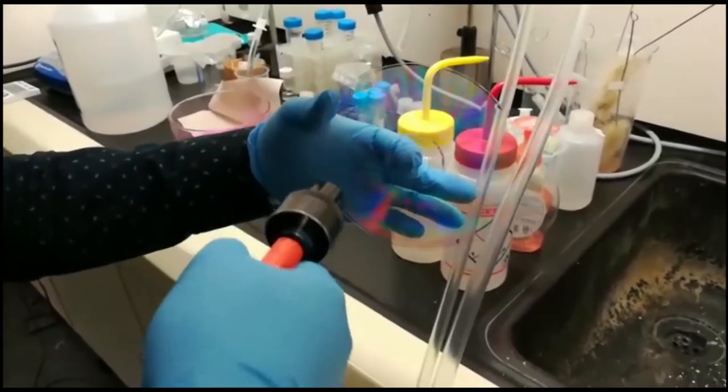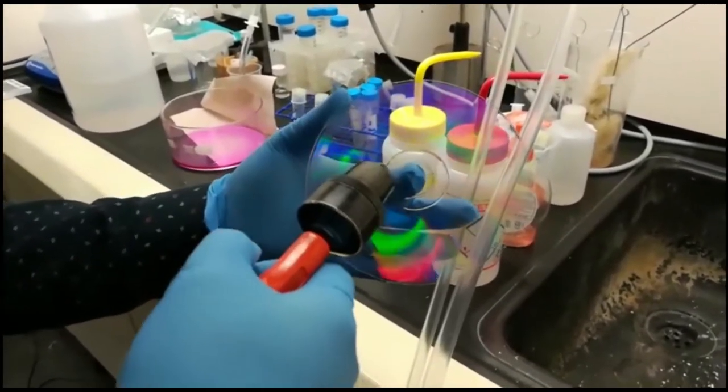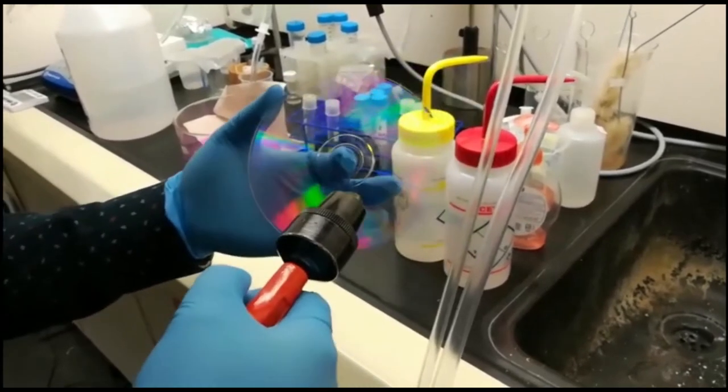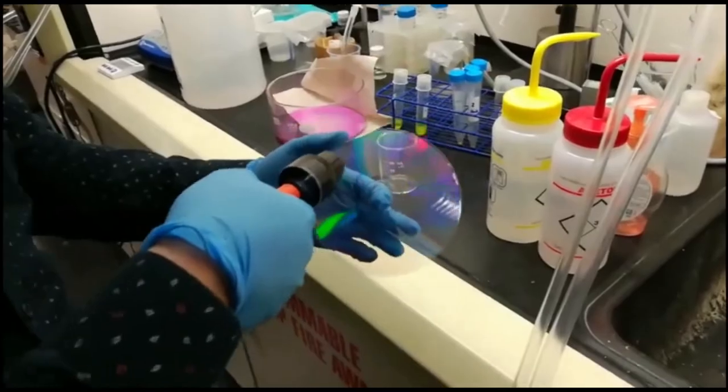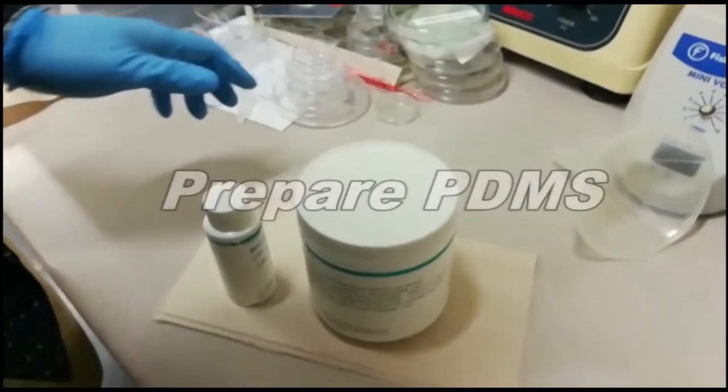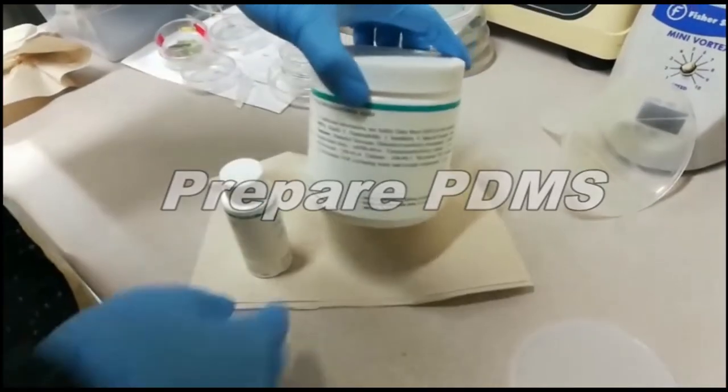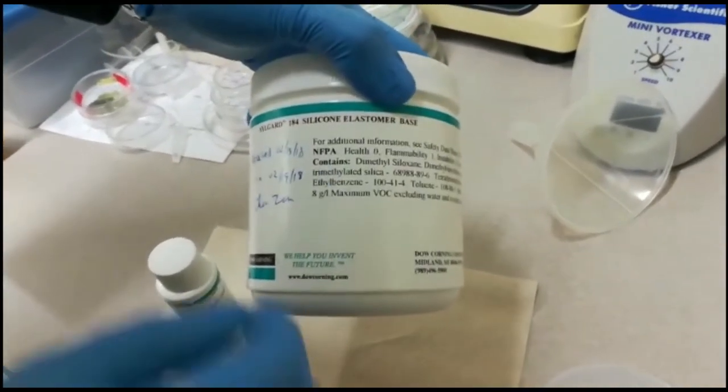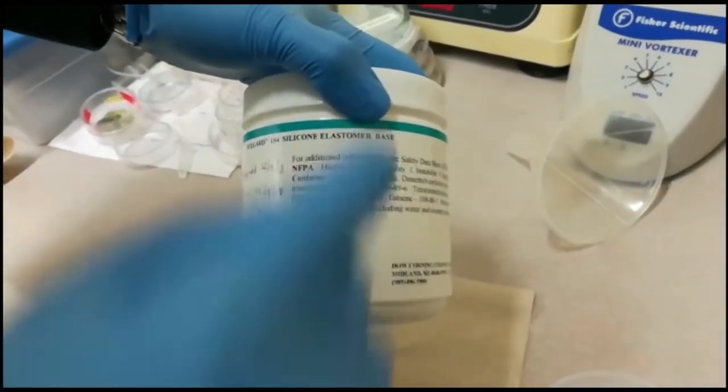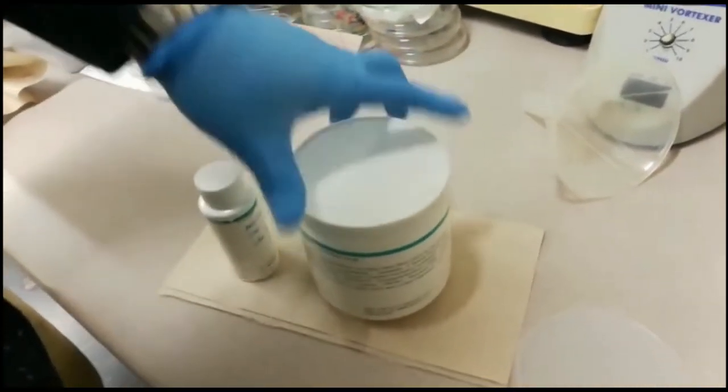After we get a dry DVD disc film with grating structures, we can do PDMS replication using soft lithography. We'll use the PDMS from Dow Corning company, silicon elastomer base as you can see here.